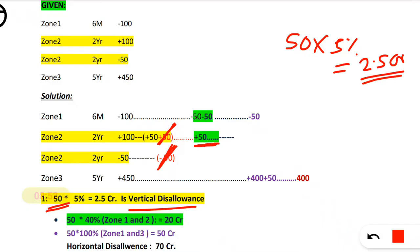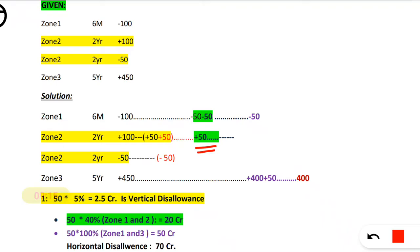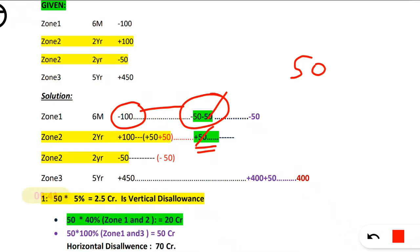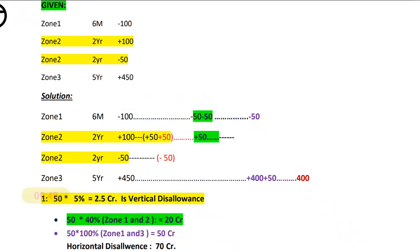The remaining is plus 50 — I have taken it as carry forward. Now with whom should I adjust that plus 50? Obviously the nearest zone. Zone 1 has minus 100. I can write minus 100 as minus 50 and minus 50. This minus 50 and this plus 50 get netted against each other. So I will have 50 which got cancelled, taken separately. When you do the netting against two adjacent zones — Zone 1 and Zone 2 — you have to take 40%.